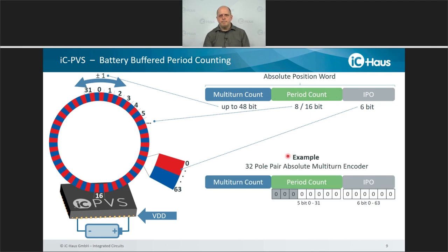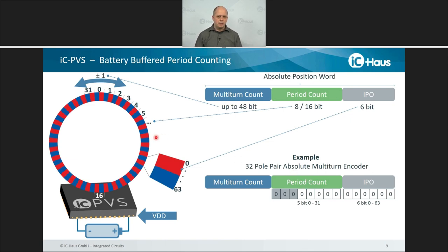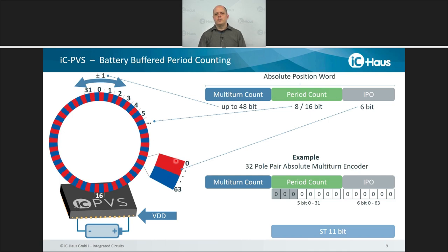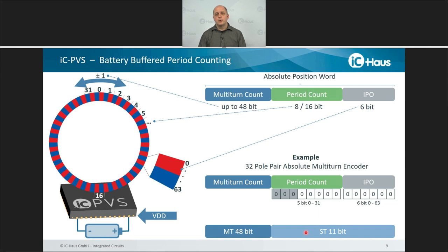For example, with a 32-pole magnetic target, the period counter can distinguish 5 bits of information, or 32 position words, since this target has 32 magnetic periods that IC PVS can count. This information is supplemented with a further 6 bits — 64 position words within one magnetic period. In total you get an 11-bit single-turn position word, which can then be amended by a multi-turn value up to 48 bits — giving you the absolute position word output by IC PVS.